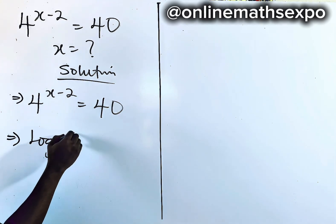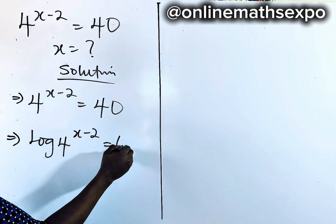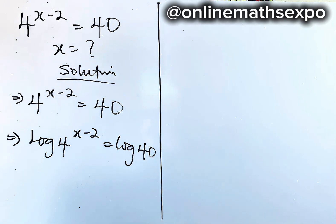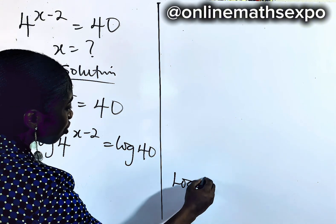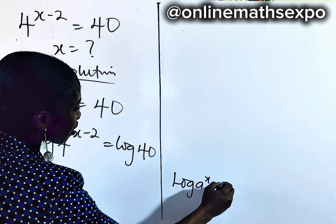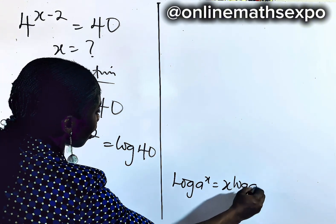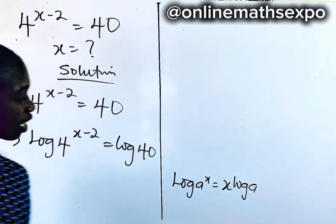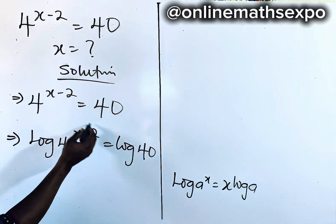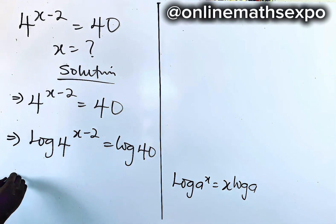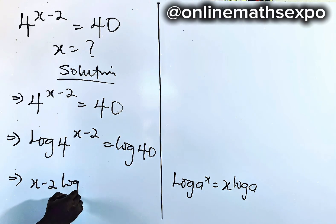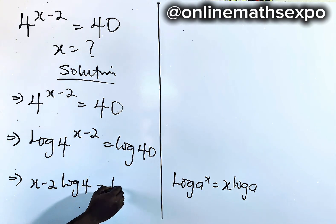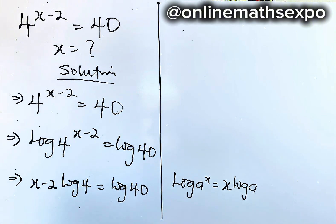So we have log of 4 to the power of x minus 2 is equal to log of 40. Now remember: for every log of a to the power of x, it's always x log a — the power multiplies. So we have (x minus 2) log 4 is equal to log of 40.